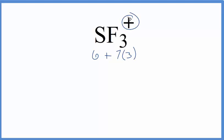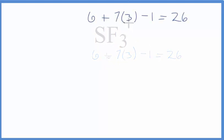And then for the positive sign up here, that means that we've lost an electron. If we lose an electron they're negative, so when we lose a negative charge we become positive. So we've lost one electron. So we have 6 plus 21, that's 27, minus 1. So we have 26 total valence electrons for the SF3 positive Lewis structure.